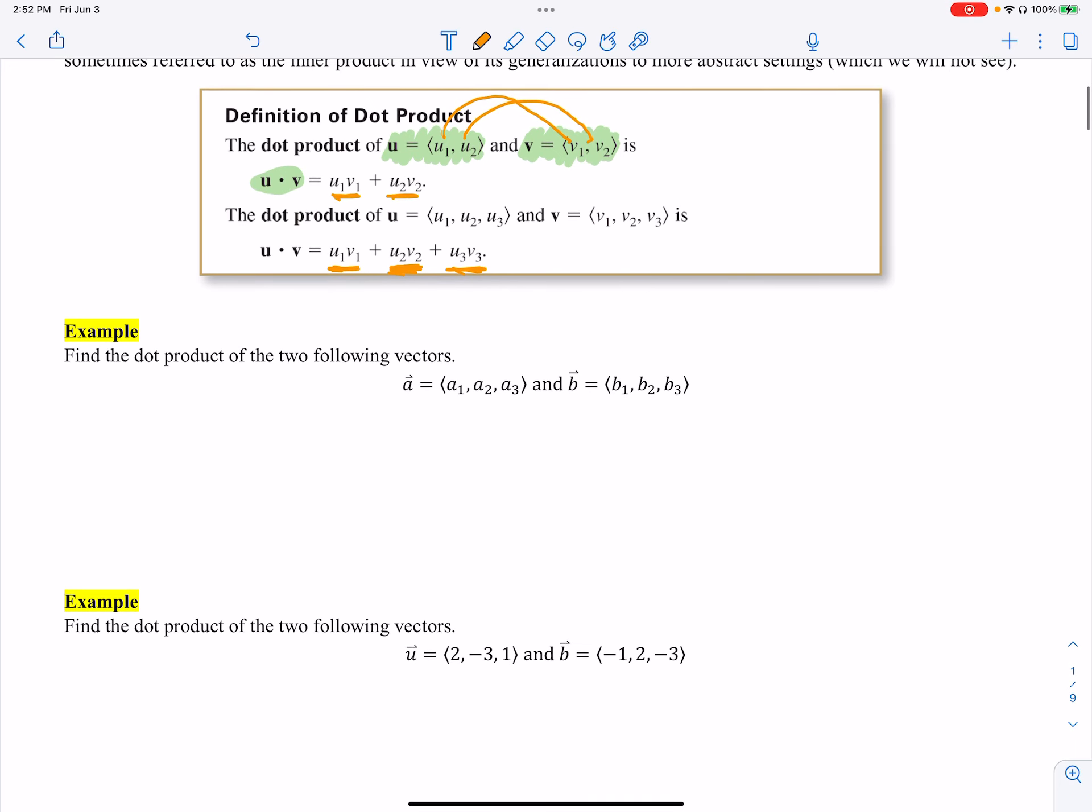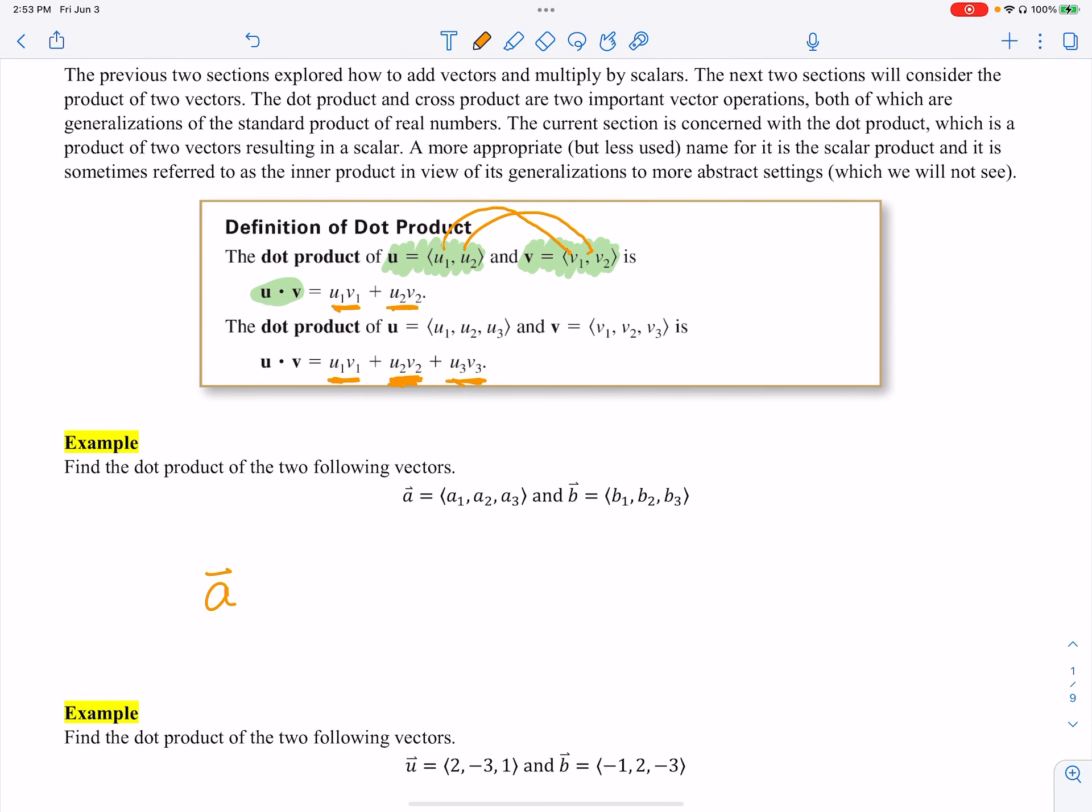All right. So let's look at an example. First one is very generic. So we have a times b, and I just wanted to do this to show simply what you do. a times b, so I got a1 times b1, whatever those are. Then I add it to a2 times b2, and then I add it to a3b3. Really straightforward, really easy to follow.